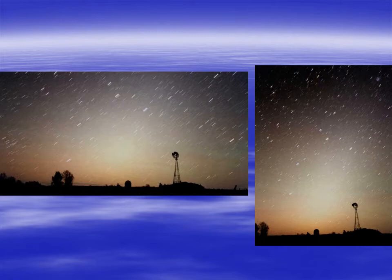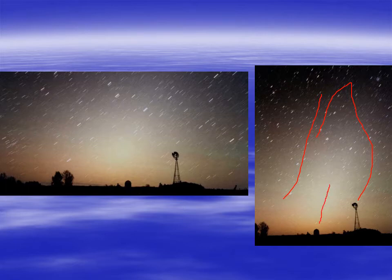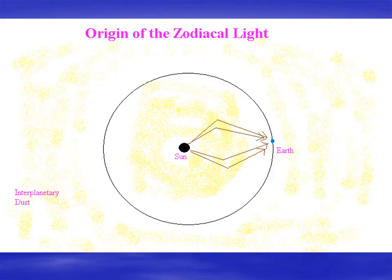If you go out at sunset and look towards the west, or at sunrise and look to the east, you get twilight. Right after sunset or right before sunrise, if you wait as the sun's setting, you can sometimes see in the sky a kind of pyramid-shaped cloud lined up with the ecliptic. A lot of people, if they see this at all, think it's just part of twilight. But really what's happening is you are seeing light reflected off interplanetary dust — sunlight reflecting off this interplanetary dust lined up with the ecliptic. That's what we call the zodiacal light.